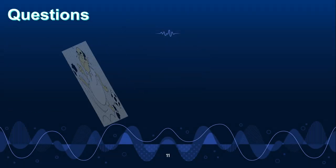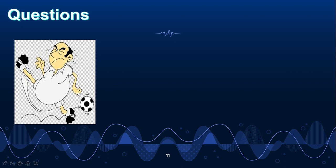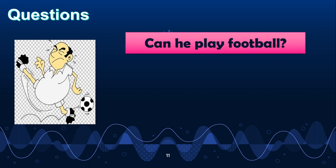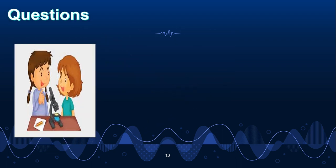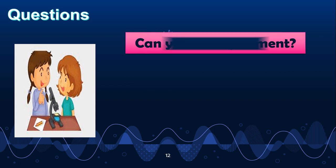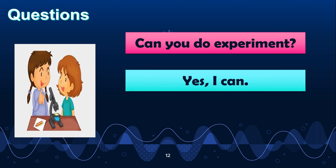Now let's practice this question. What is the uncle doing? I think he should be playing football. So how will the question be? Can he play football? Is the uncle able to play football? No. So: no, he can't. Now look at this picture — they are talking about something. Can you do an experiment? Yes, I can. Remember kids, when you are asking someone in front of you, you will use you. When you are answering, you will use I. So can you do an experiment? The answer will be: yes, I can.